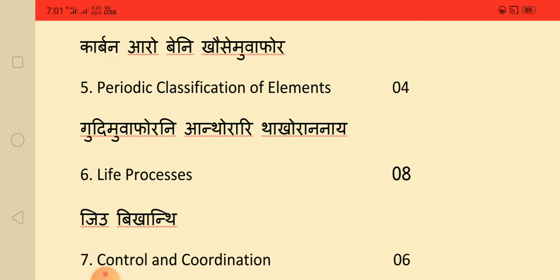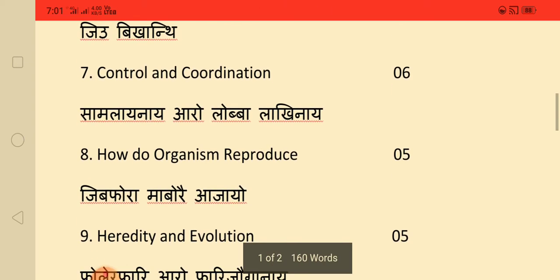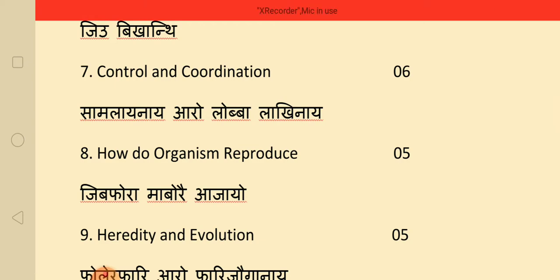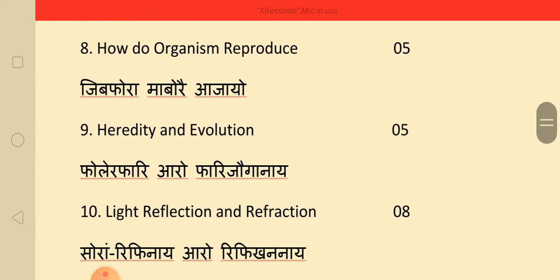Life processes — this is the second science section. Control and coordination. How do organisms reproduce? These are the biology chapters covered in the HSLC blueprint.